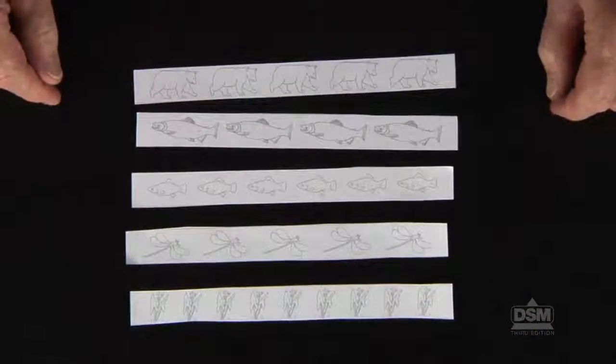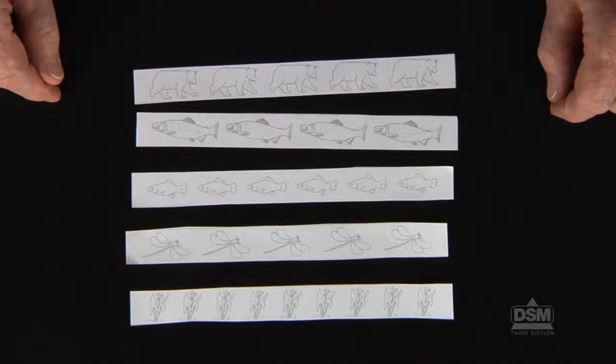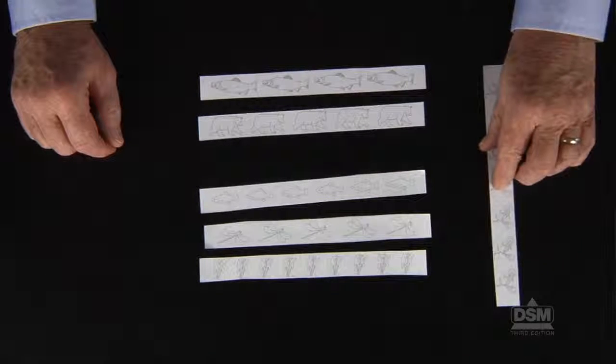The order of the food chain is plant, insect, small fish, large fish, and bear. Point out that the bicycle does not belong in the food chain.